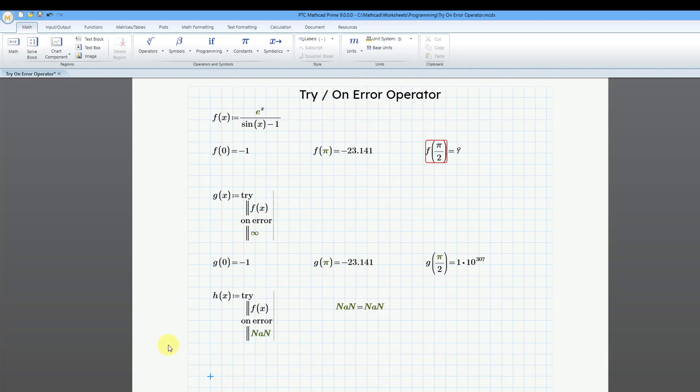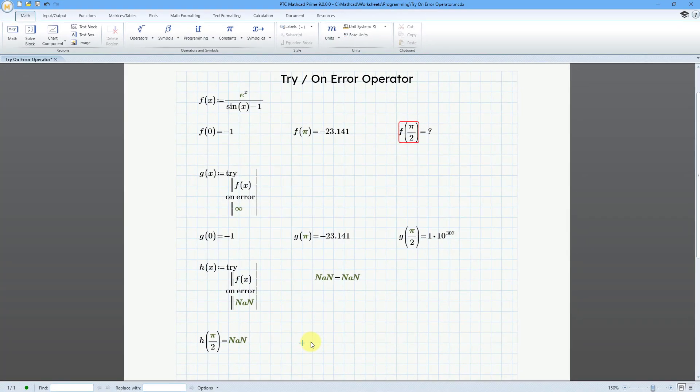So let's try evaluating that. Let's just go right to H of pi over 2, P, ctrl G, divided by 2, and then the equal sign, NAN for not a number. So that's how you can use the try operator in order to trap different errors in your MathCAD functions.